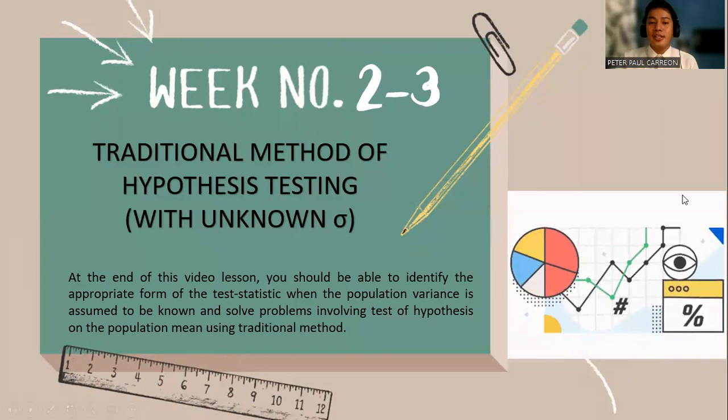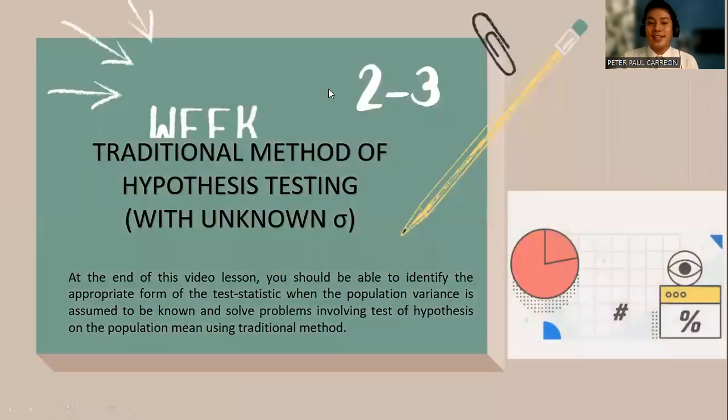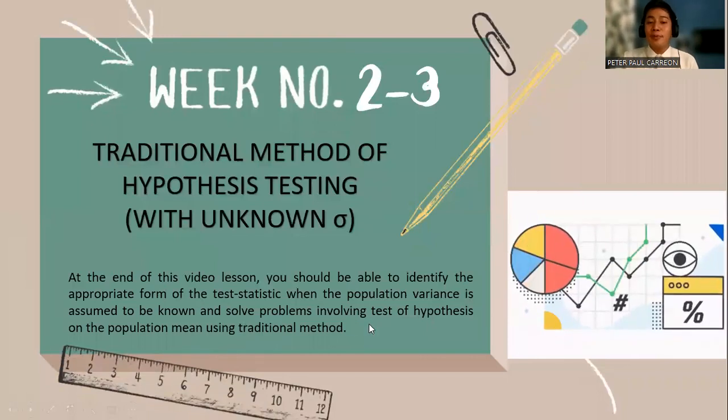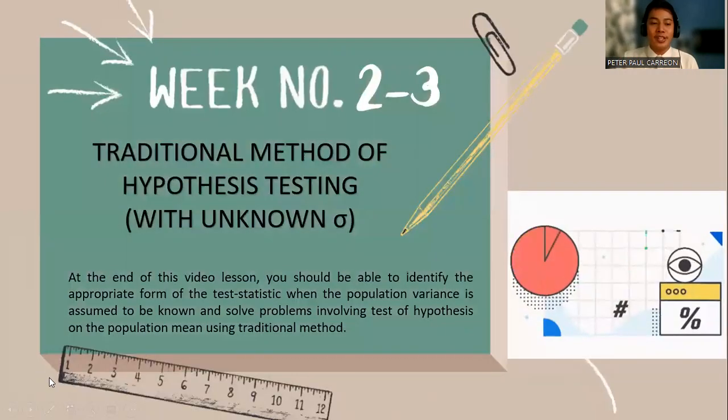At the end of this video lesson, you should be able to identify the appropriate form of test statistic when the population variance is assumed to be known and solve problems involving test of hypotheses on the population mean using the traditional method.